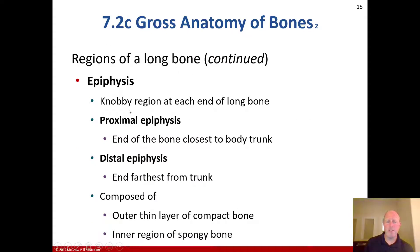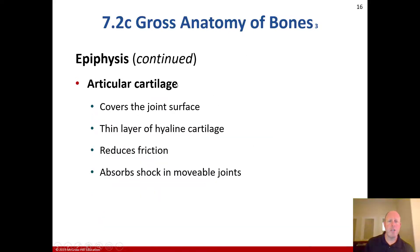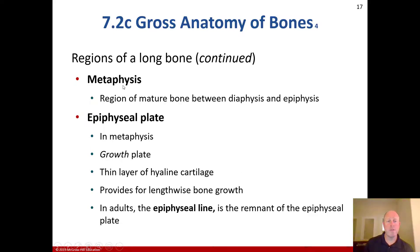The epiphysis is the knobby region at each end of the long bone — both proximal and distal. The proximal epiphysis is closest to the body trunk; the distal epiphysis is farthest from the trunk. They're composed of an outer thin layer of compact bone and an inner region of spongy bone. Articular cartilage covers the joint surface at the end of the epiphysis — a thin layer of hyaline cartilage that reduces friction and absorbs shock. The metaphysis is the region between the diaphysis and the epiphysis. The epiphyseal plate, or growth plate, is in the metaphysis — a thin layer of hyaline cartilage providing lengthwise bone growth. In adults, it becomes the epiphyseal line, fusing at sexual maturity.